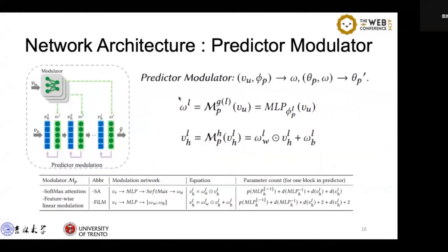For the predictor, we also introduce a predictor modulator to achieve the impression of preference distribution of each user. It receives task representation as input and outputs modulation vectors for each layer of the predictor via multilayer perceptron. Here we use a method called feature-wise linear modulation. We also define an attention-based method for comparative analysis.